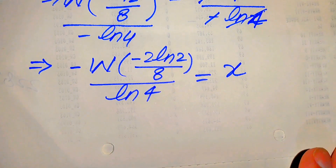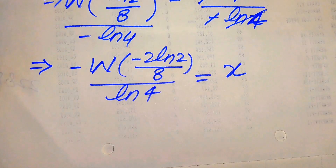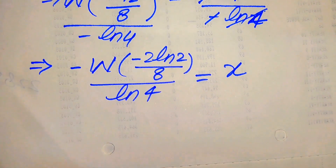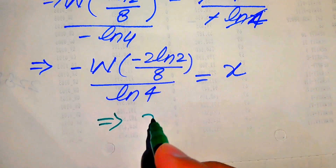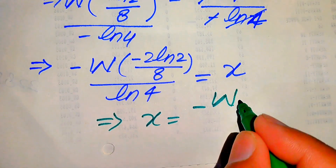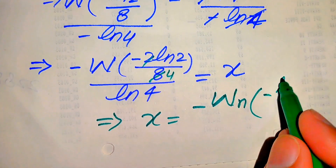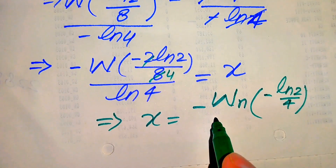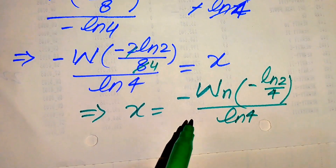Recall from the start of the problem — the graph showed both functions intersecting at two points, meaning we need to find two roots. The Lambert W function has n branches, so we write the general solution as x = -W_n(-log 2 / 4) / log 4, where the subscript n denotes the branch of the Lambert W function.